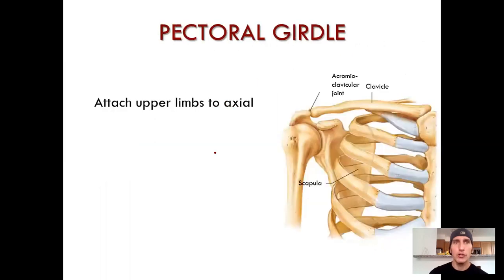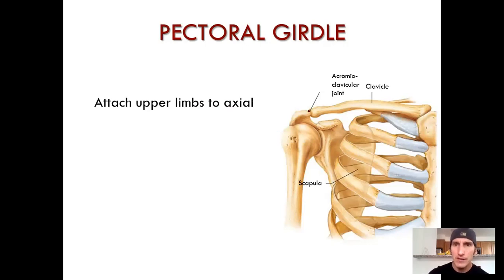The pectoral girdle attaches the upper limbs to the axial skeleton — basically, arms to the trunk. Take a moment to appreciate this graphic and what's going on here. Feel free to pause the video and take note of some of these key terms.